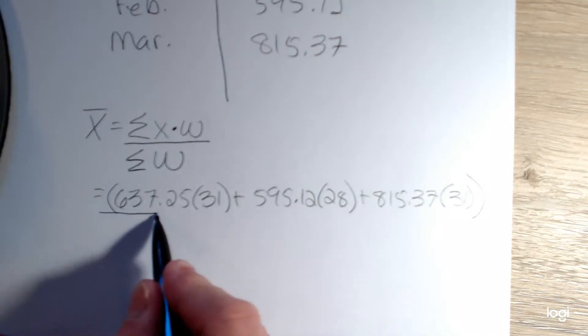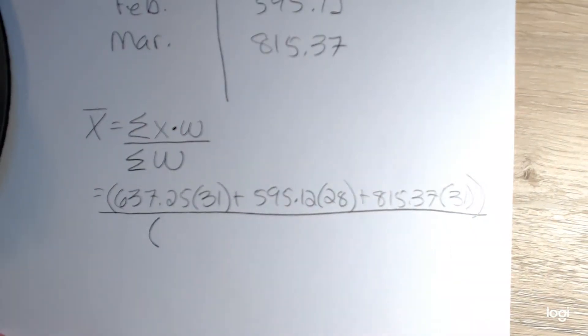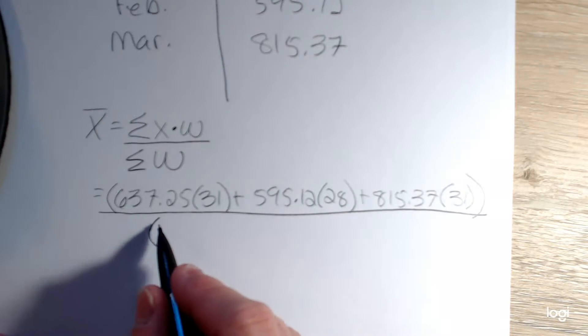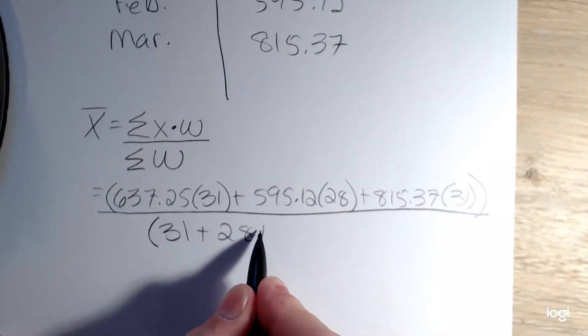And then I want to divide by the sum of the weights. So my sum of the weights will be 31 plus 28 plus 31.